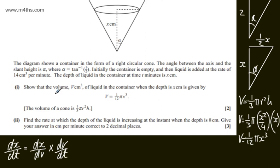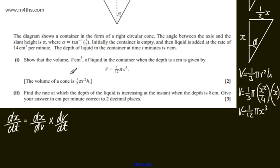We already have a value of dv dt, which is constant at 14 centimeters cubed per minute. If we read this here, we can see liquid is added at the rate of, that is dv dt. So we can say that dx dt is going to be equal to 14, and then we will have now dx dv.